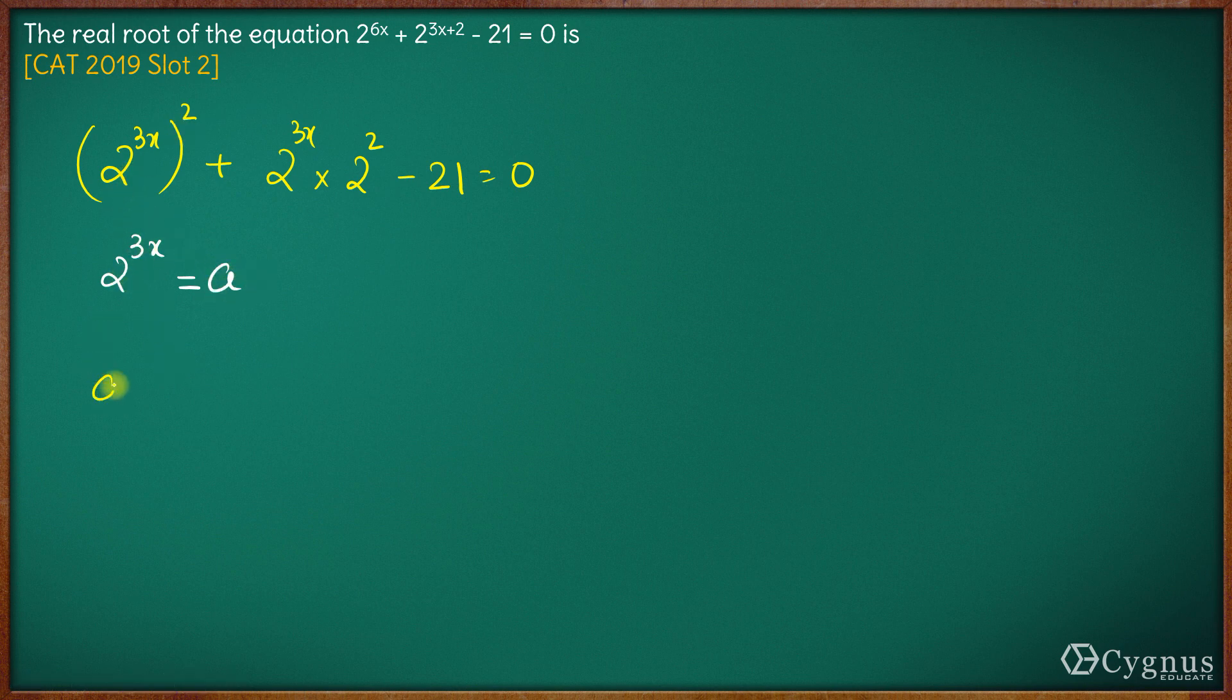So this here is a squared plus this here is a into 4, 4a minus 21 equals 0. So this becomes a quadratic expression, a very simple quadratic expression. That is why we did this whole simplification.